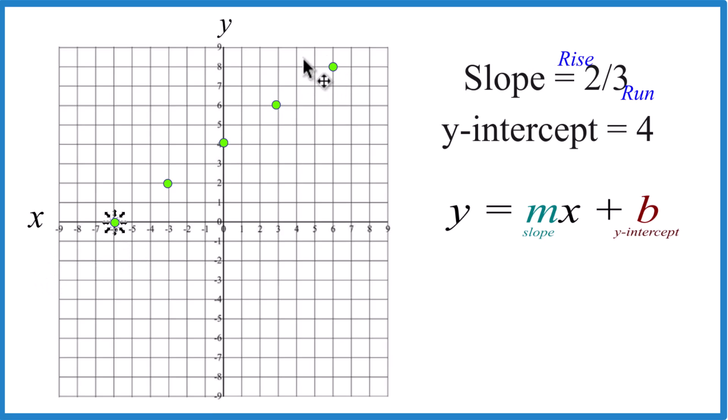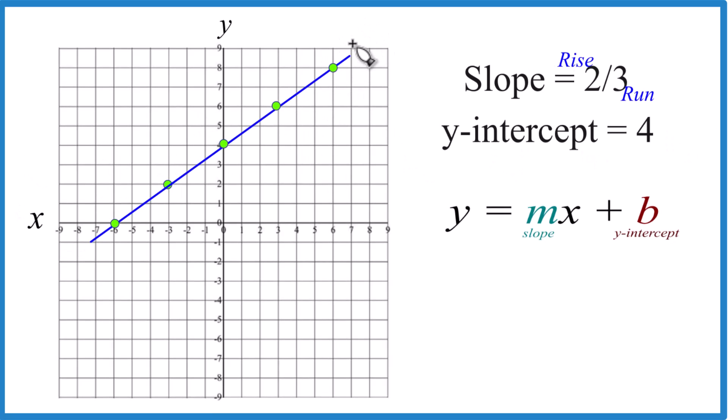All those points, they're on the line with slope two-thirds, where the y-intercept right here, that's four. Let's put a line through this. And then we'll put some arrows, show it goes to infinity.